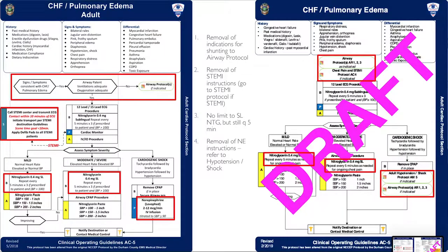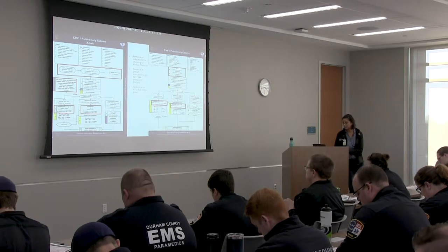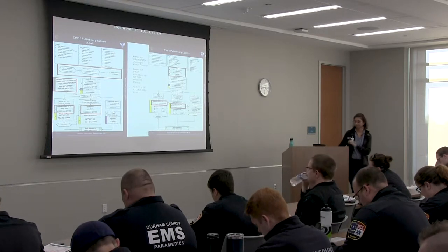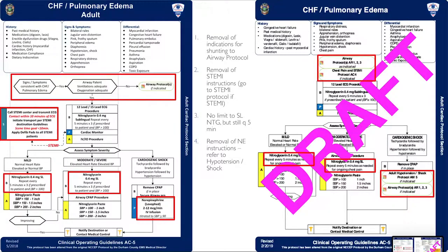CHF pulmonary edema: we've removed or changed the indications for shunting to the airway protocol, and removal of the STEMI instructions — instead you would just go to the STEMI protocol. No limit to sublingual nitroglycerin, but still every five minutes for advanced. It's still going to be times three for basics. Removal of instructions for norepinephrine — instead you're referred to the hypotension shock protocol.